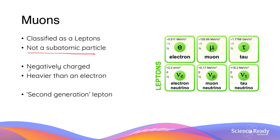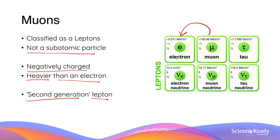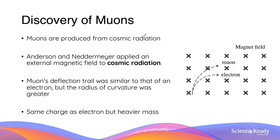Like the electron, the muon is also negatively charged, however it is heavier than the electron. It is a second-generation lepton and is much more unstable than the electron. When the muon decays it forms the first-generation lepton, the electron. Muons are produced from cosmic radiation, which is found in the background of the universe and is quite abundant in the upper atmosphere of Earth.